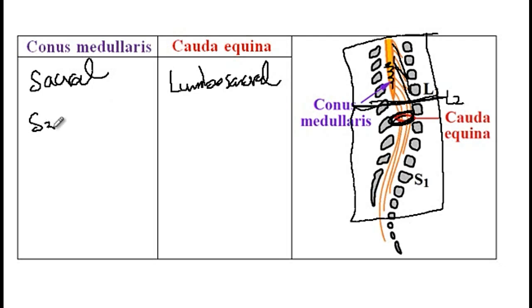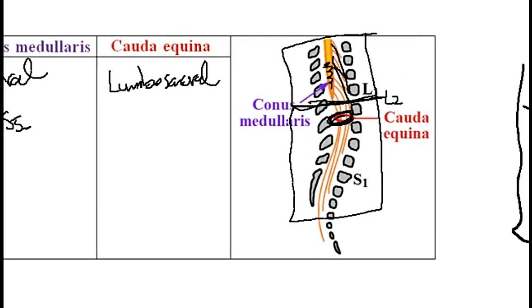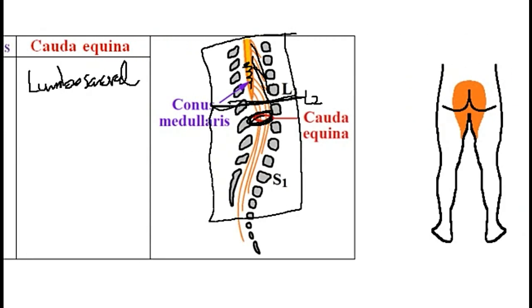Because of the damage to S3 to S5, both of these conditions are associated with bladder and bowel dysfunction, impotence, and saddle anesthesia. By saddle anesthesia, I mean loss of sensation in the buttocks, in the perineum, as well as the inner surface of the thighs.